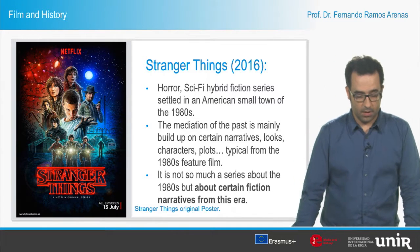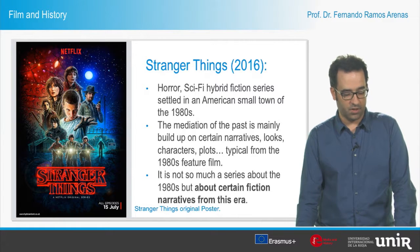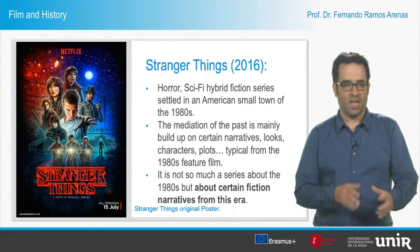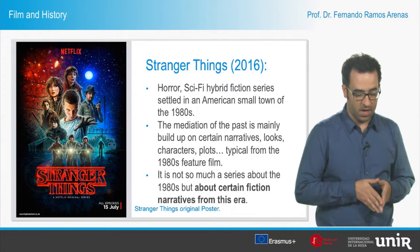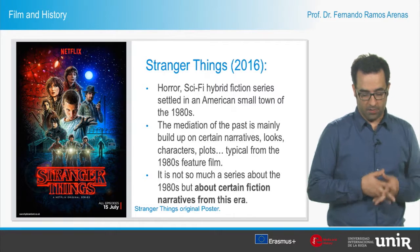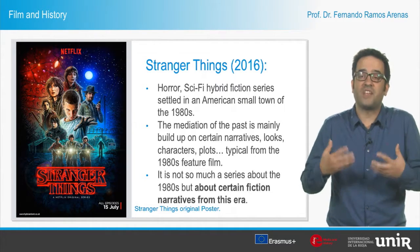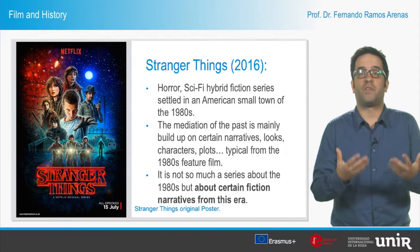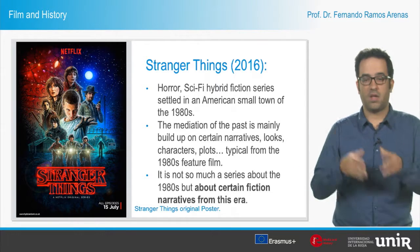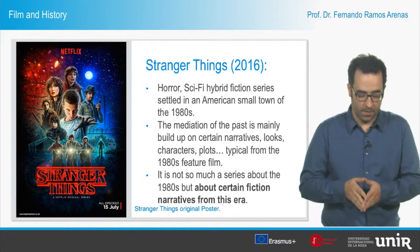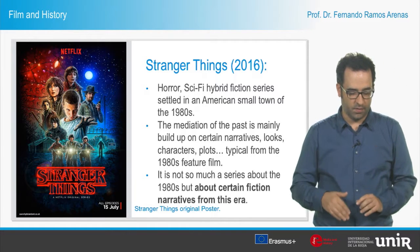The third example, a more current one, is the Netflix fiction series Stranger Things — a horror science fiction hybrid set in an American small town of the 1980s. In this case, the relation to the past does not raise questions about historical accuracy, but rather about looks, clothes, hairdos, music — based on a mediation rooted in the images of fiction films from the 1980s.